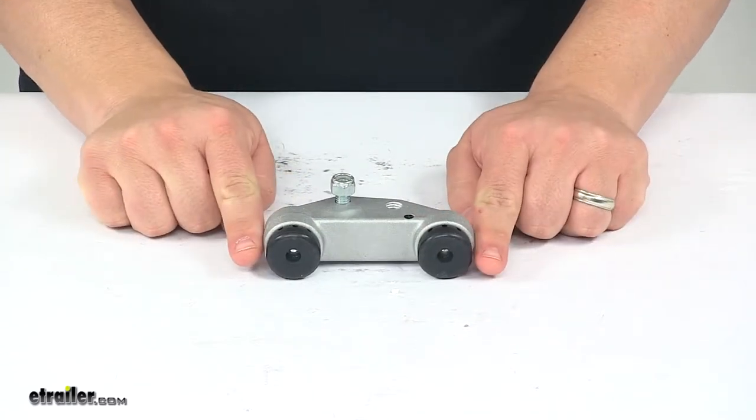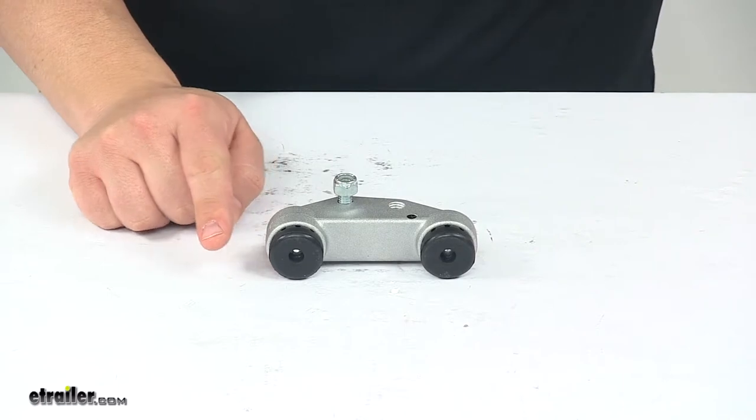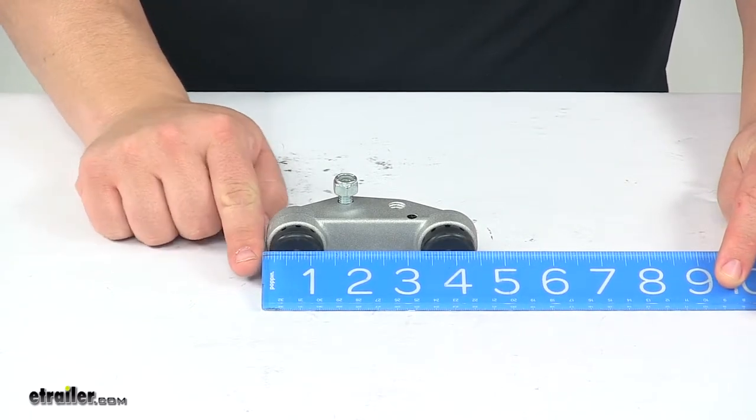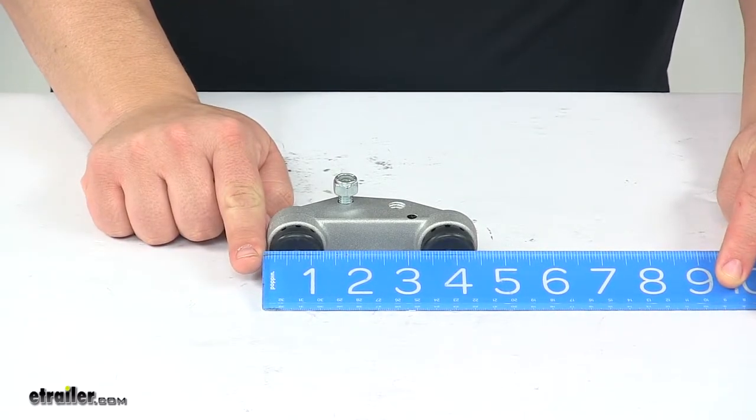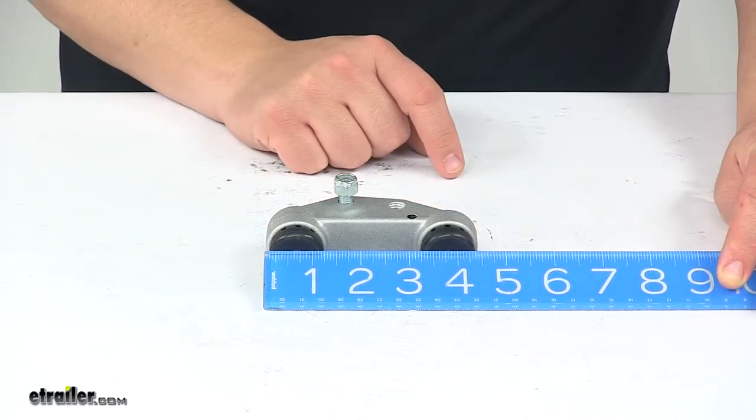Now when it comes to the overall dimensions, I took a measurement from outer edge to outer edge. This would be our overall length measurement, and I got a measurement of about four and a half, maybe four and seven sixteenths of an inch long.